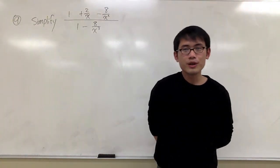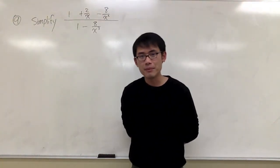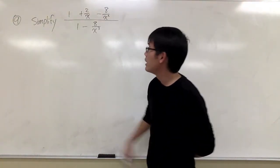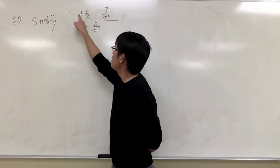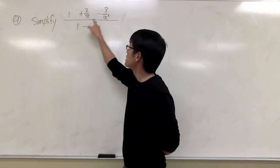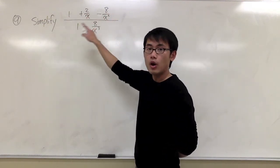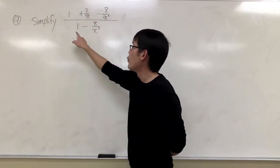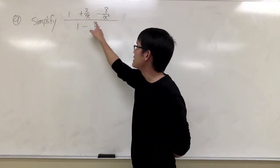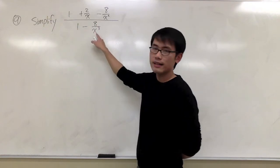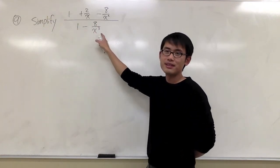For question number 9, we are going to simplify this complex fraction: 1 plus 2 over x minus 8 over x squared, all over 1 minus 8 over x to the third power.